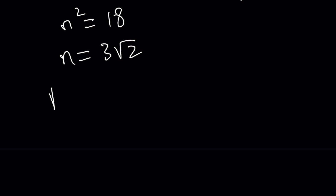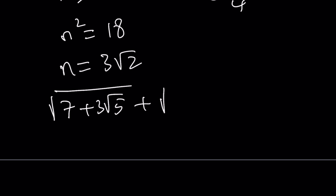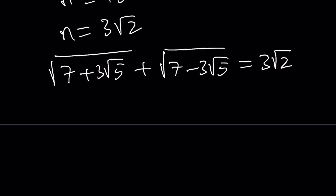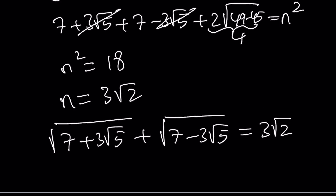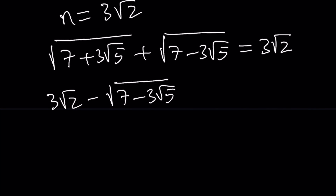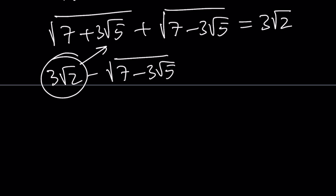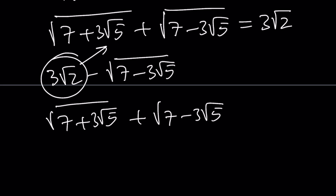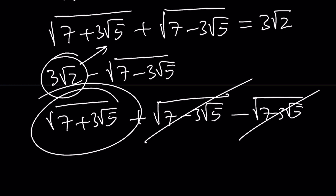This is significant! Because our original expression had 3 root 2 in it, so this helps. We know the sum of the two conjugate radicals equals 3 root 2. The original problem asks for 3 root 2 minus square root of 7 minus 3 root 5. Replacing 3 root 2 with square root of 7 plus 3 root 5 plus square root of 7 minus 3 root 5, those last terms cancel, and we end up with the answer: square root of 7 plus 3 root 5.